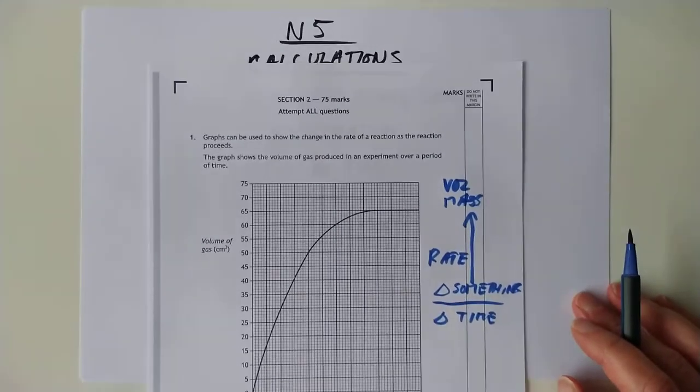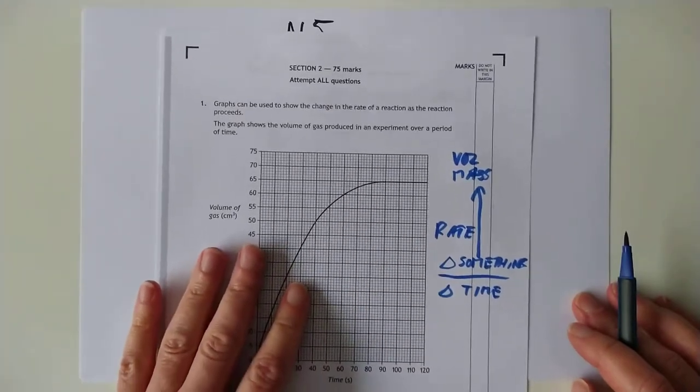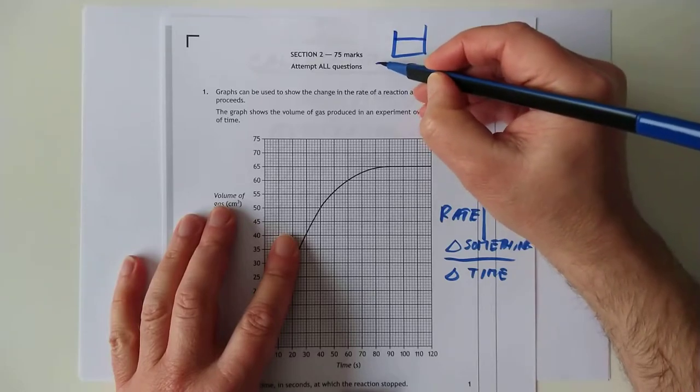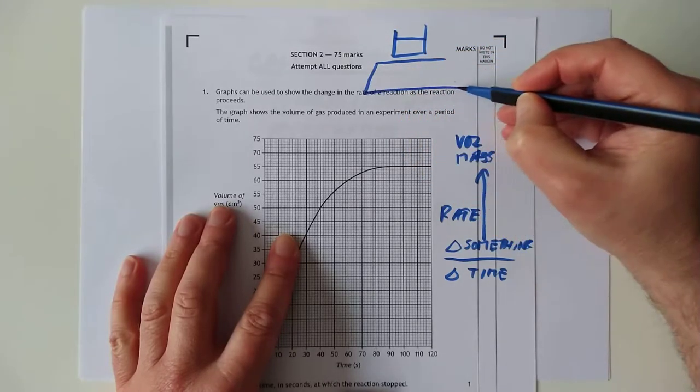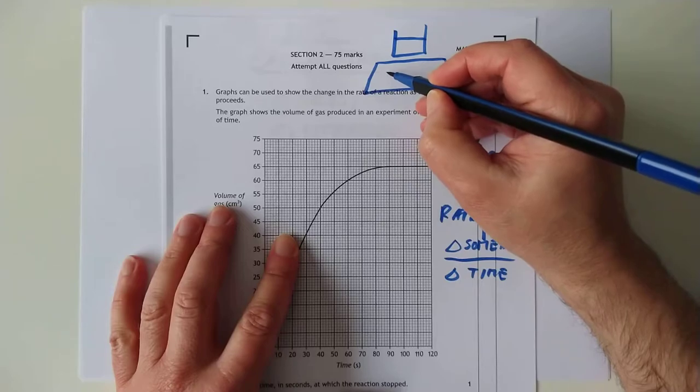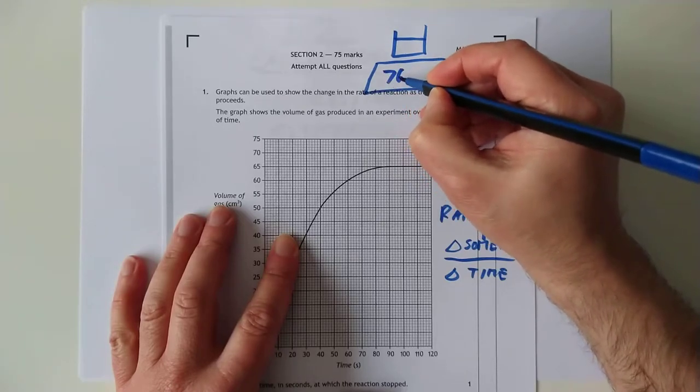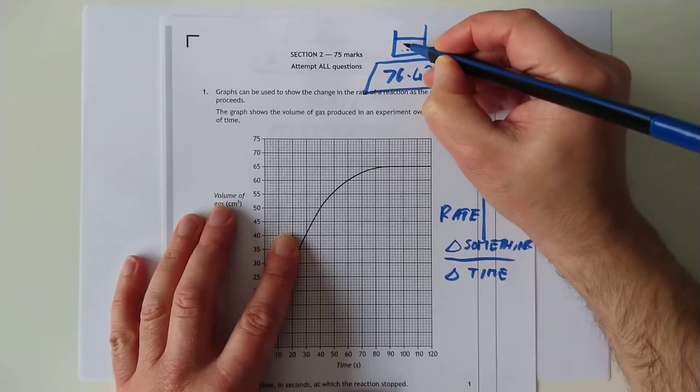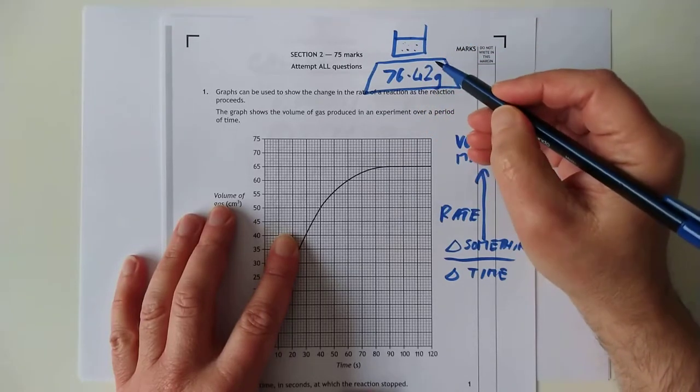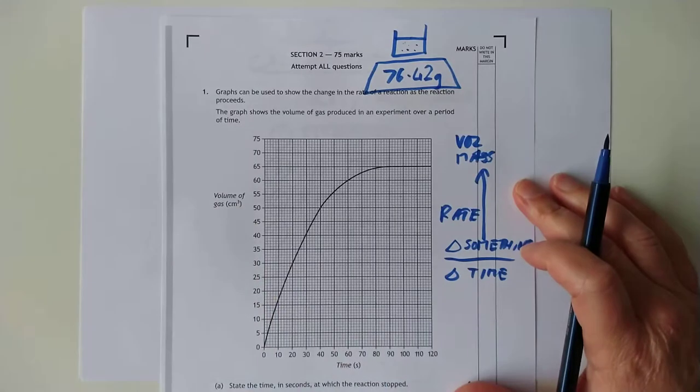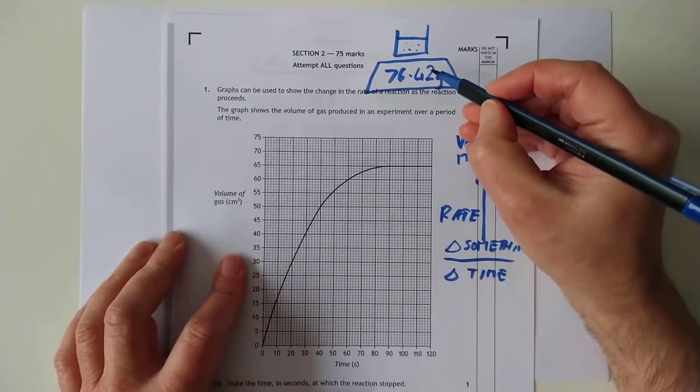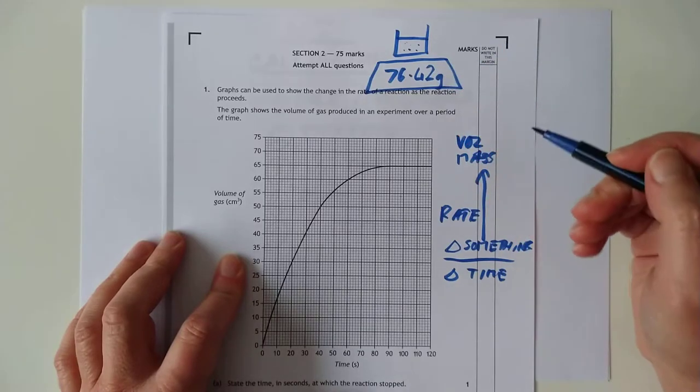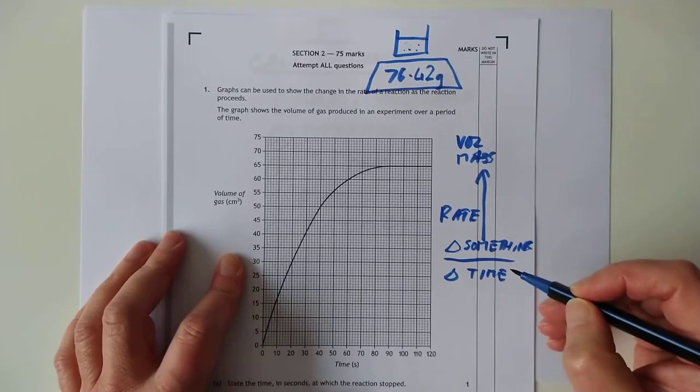There is another one. You can actually take a balance, an accurate balance. You could plonk your mixture on top of the accurate balance. And let's say it weighs, I don't know, say 76.42 grams at the start. And you've got something here giving off a gas. Believe it or not, gas weighs a surprising amount. We just don't notice it. And that number there will start to tick down. It will tick down to 41 and then 40 and then 39. So you can also have a change in mass divided by a change in time.